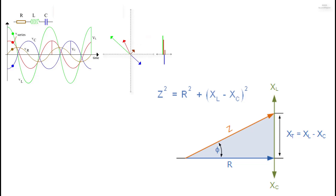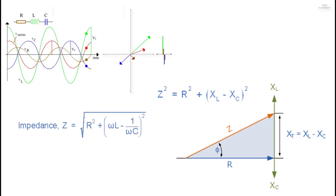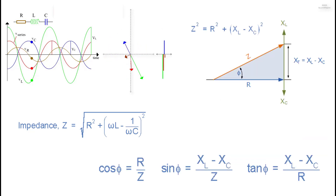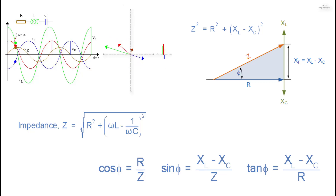The magnitude of the current depends upon the frequency applied to the series RLC circuit. When impedance Z is at its maximum the current is at a minimum, and when Z is at its minimum the current is at maximum. The phase angle theta between the source voltage VS and the current I is the same as the angle between Z and R in the impedance triangle. This phase angle may be positive or negative depending on whether the source voltage leads or lags the circuit current.